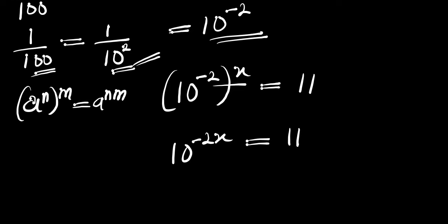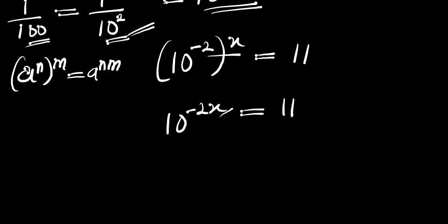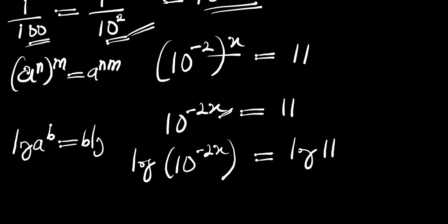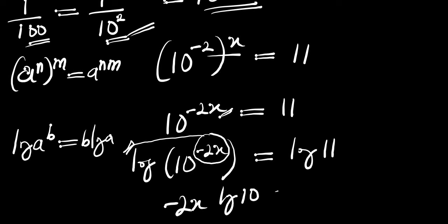Now at this point, in order to solve for x, we need to introduce log. Log of 10 to the power of negative 2x equals log of 11. Now if you have log of a to the power of b, this equals b times log of a. So this exponent will come in front of the log, giving us negative 2x times log of 10, and this equals log of 11.